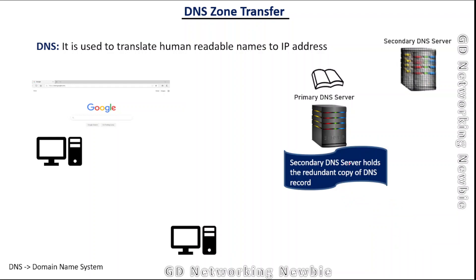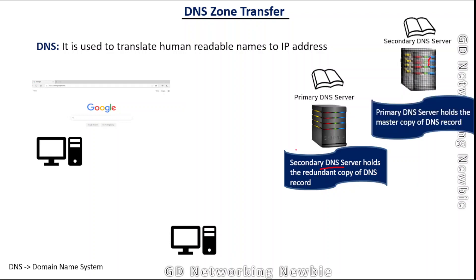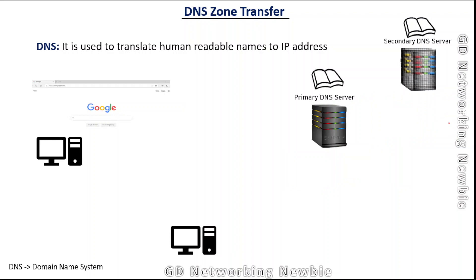The secondary DNS server holds the redundant copy of the DNS record, and the primary DNS server holds the master copy. These DNS servers actually hold mirror image copies of each other, so if an administrator makes some changes in the primary DNS server, the secondary DNS server may need to request those updates from the primary server.